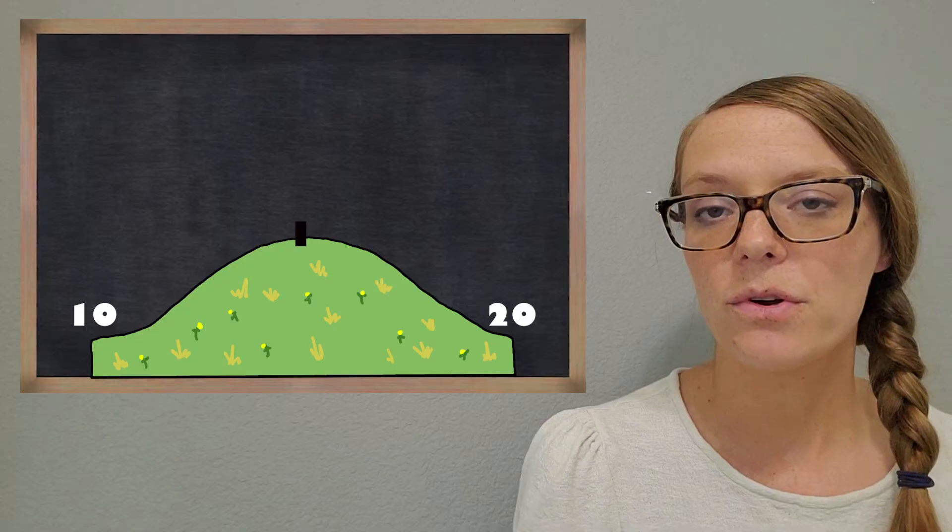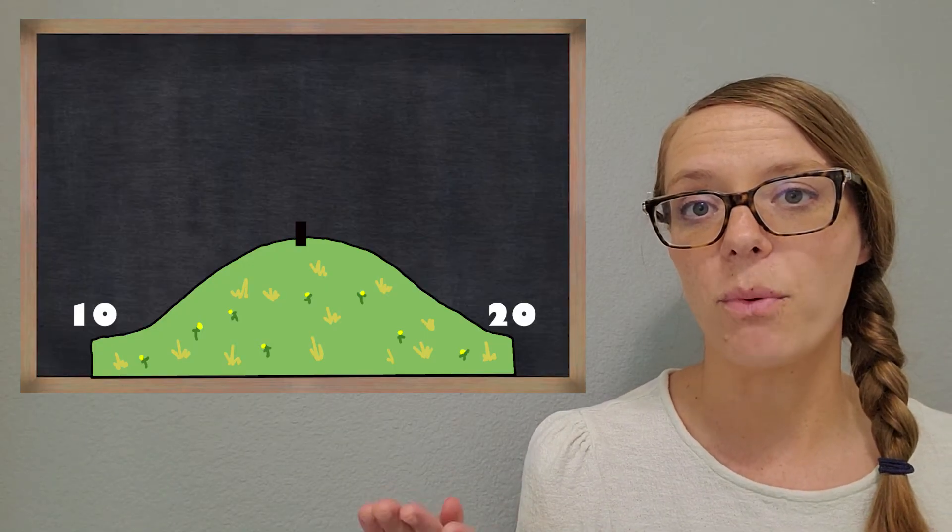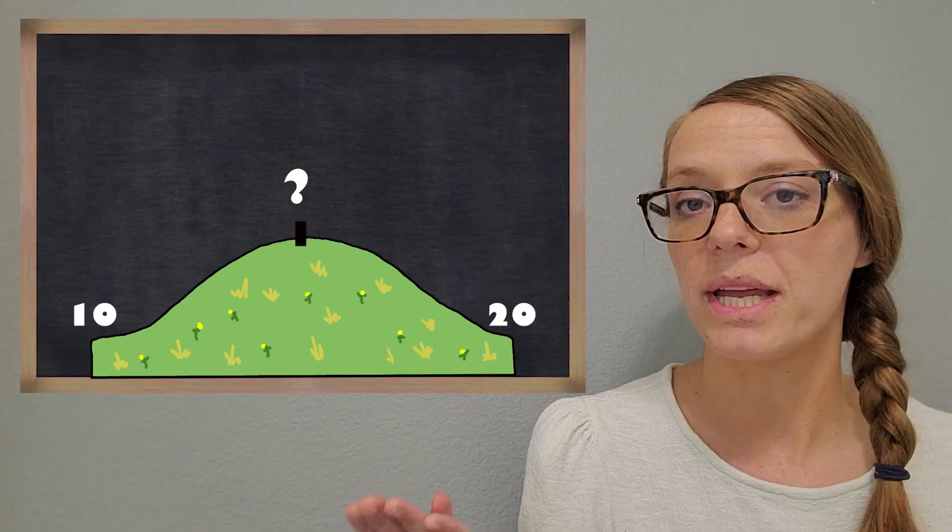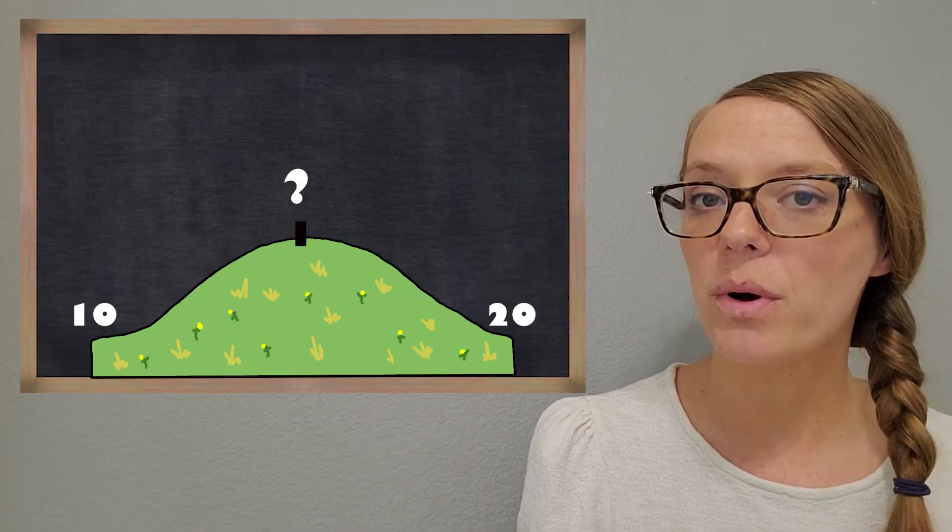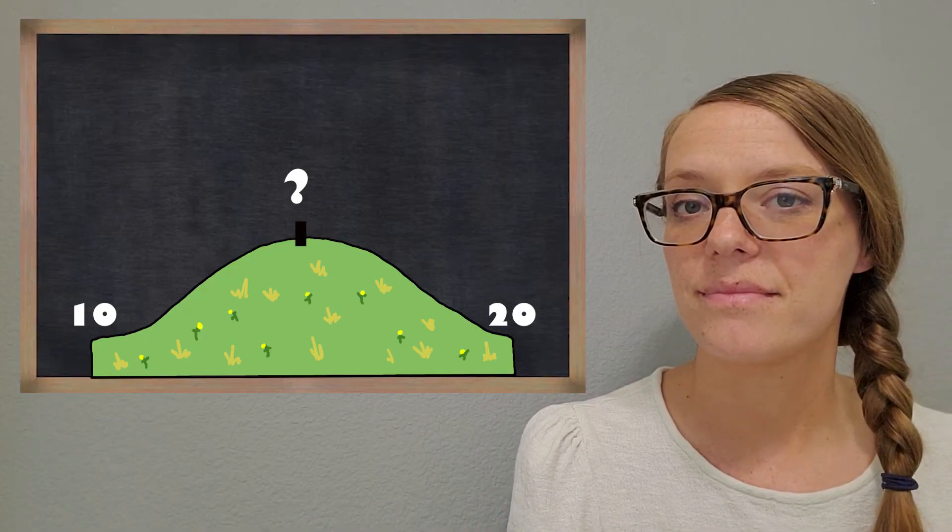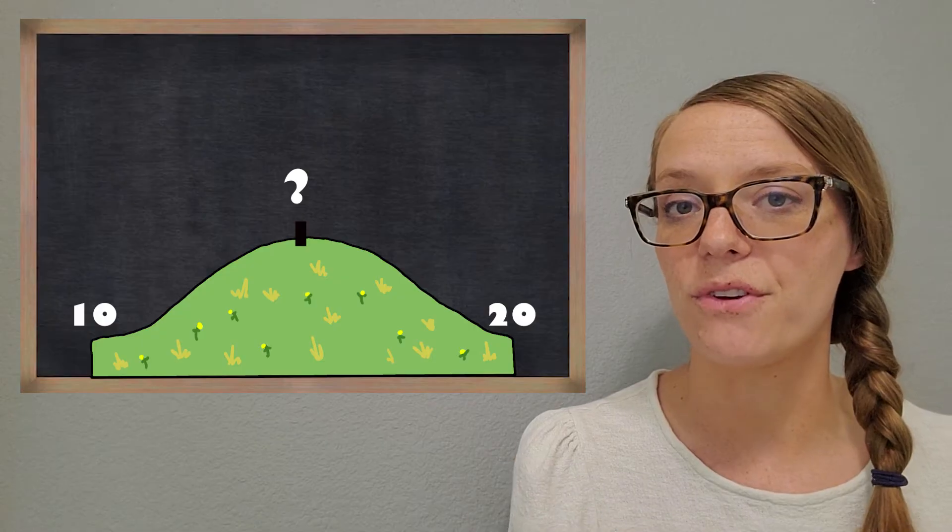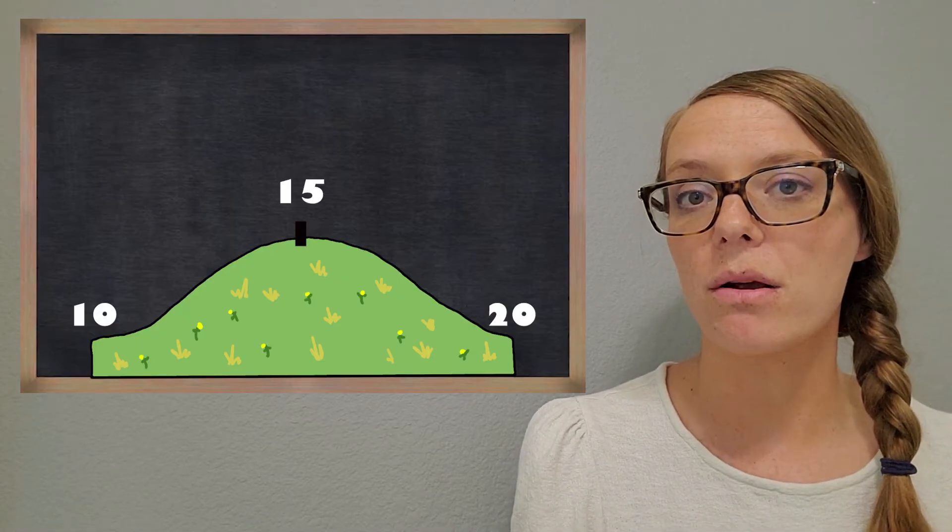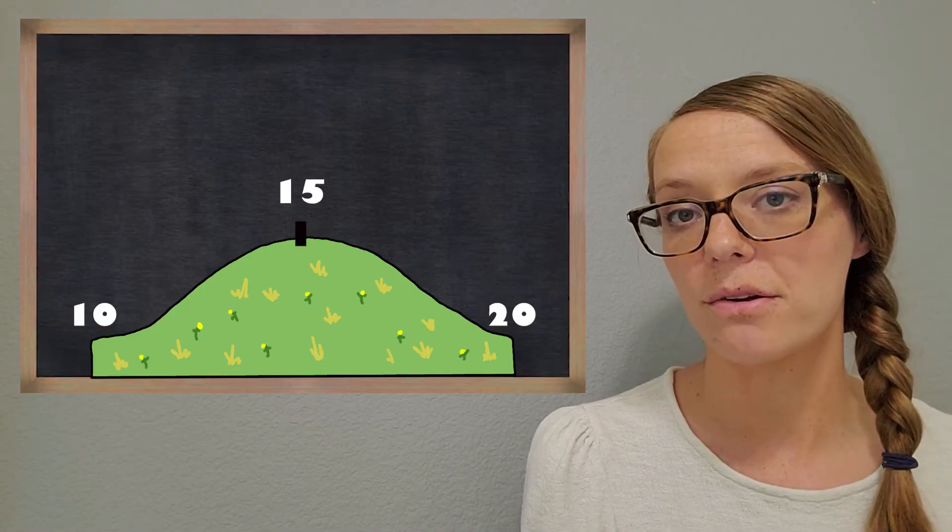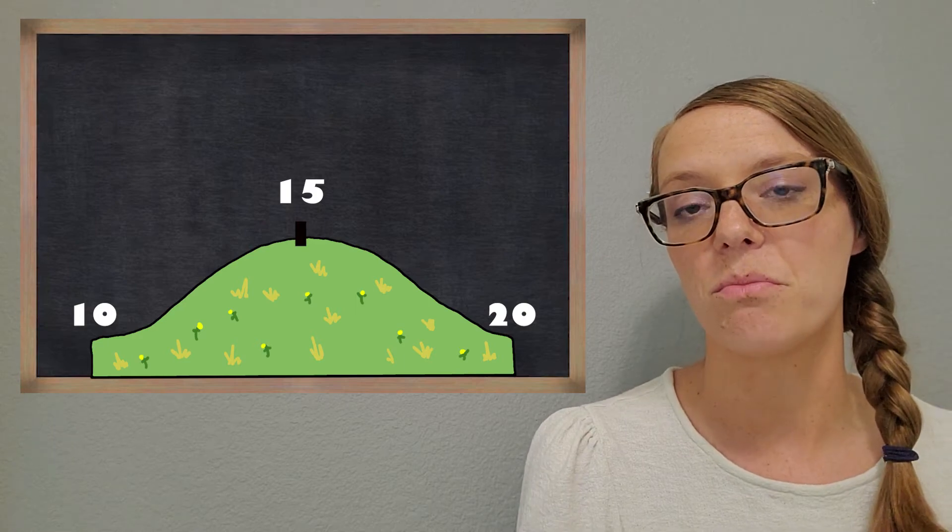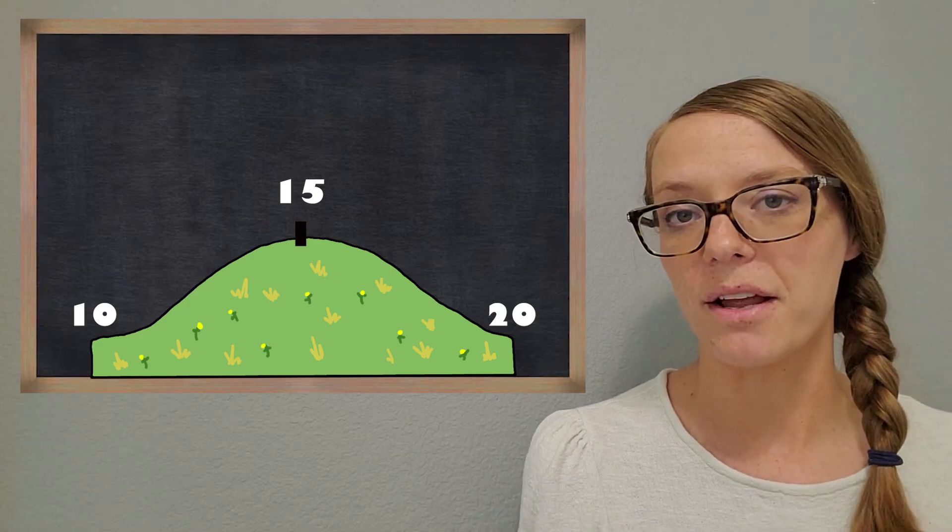So the first thing I want to ask you is what is that halfway mark? What's halfway between 10 and 20? Great. You got it. It's 15. My halfway marks are always going to have a 5 in there somewhere. You're going to see as we do more activities that there's always going to be a 5 in there.